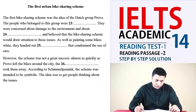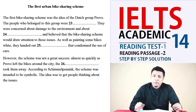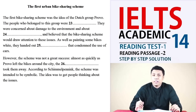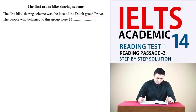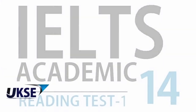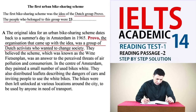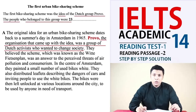Now we have the complete-the-summary question type. We are given a summary of information from the text and asked to fill the gaps with words from the text. The first question: 'The first bike sharing scheme was the idea of the ___ group Provo. The people who belong to this group were something.' In the second and third lines of paragraph M we find the keywords — the organization that came up with the idea was a group of Dutch activists who wanted to change society. The people who belonged to the Provo group were activists, so the answer is 'activists.'